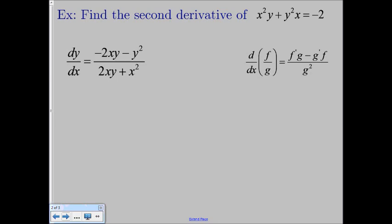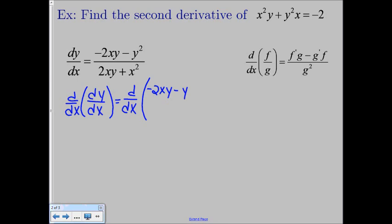So we know how to find the second derivative — we just take the derivative of the first derivative. So we're going to have d/dx of dy/dx, which is going to equal d/dx, or the derivative with respect to x, of negative 2xy minus y squared all over 2xy plus x squared. On the left-hand side, d/dx times dy/dx is going to be d squared y over dx squared, which is the notation we use for our second derivative of y with respect to x.